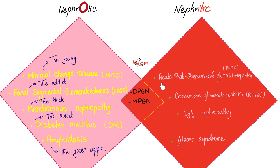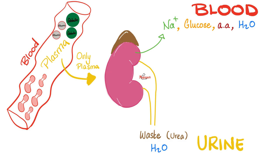Nephritic syndromes include acute post-streptococcal GN, IgA nephropathy, and Alport syndrome. Today we are talking about Goodpasture syndrome. Your blood contains plasma — including plasma proteins — and red blood cells. If your kidney is losing plasma proteins, it's nephrotic syndrome. If your kidney is losing red blood cells, it's nephritic syndrome.